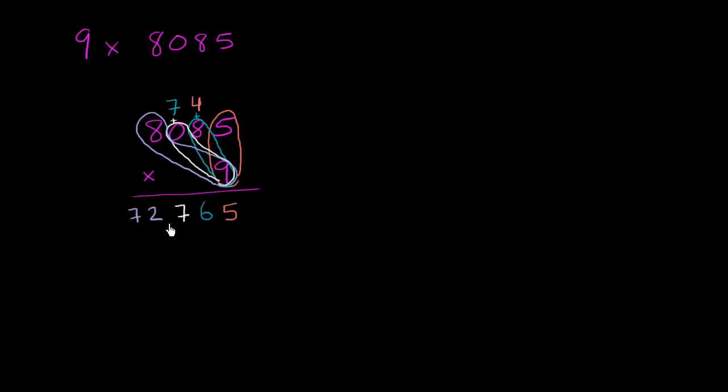8,085 times 9 is 72,765. Let's do one more example just to make sure that this is really clear in your brain, at least the process for doing this.